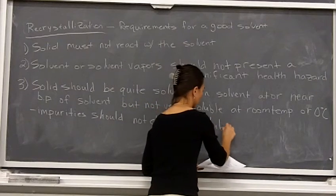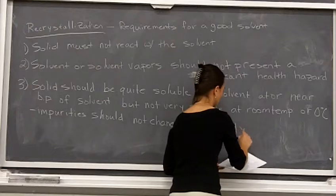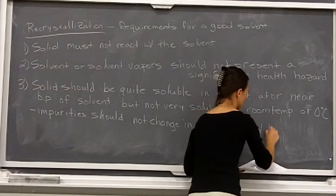And number three: the solid that you are dissolving should be quite soluble in solvent at or near the boiling point of the solvent — basically soluble when hot — but not very soluble at room temperature or zero degrees.